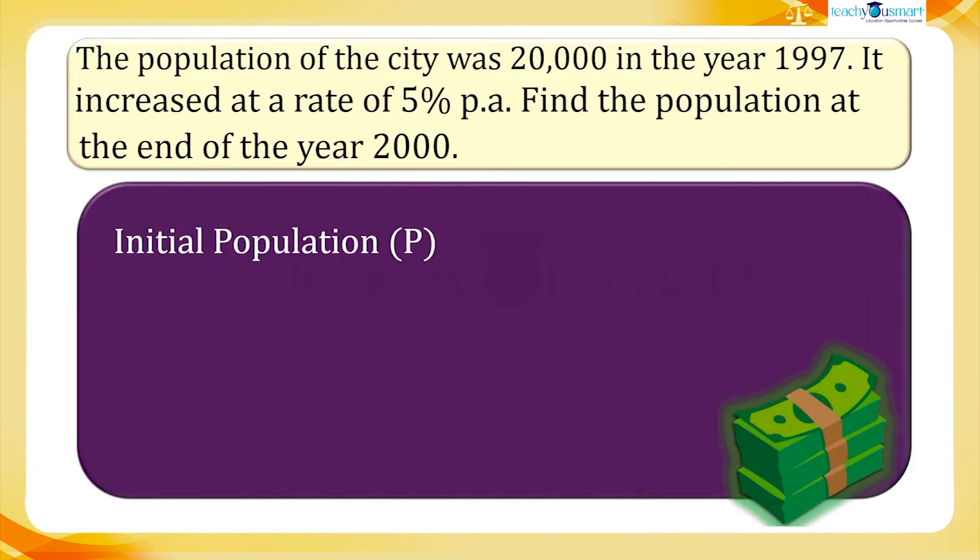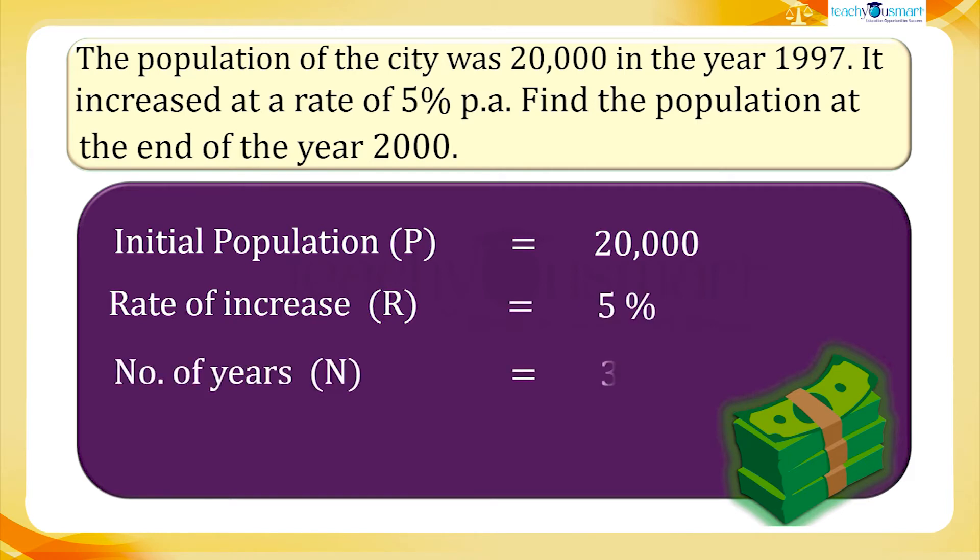Here, the initial population P equals 20,000. Rate of increase R equals 5%. Number of years n equals 3 years.